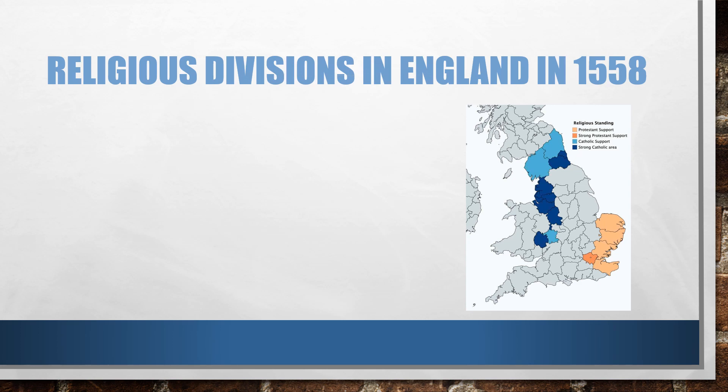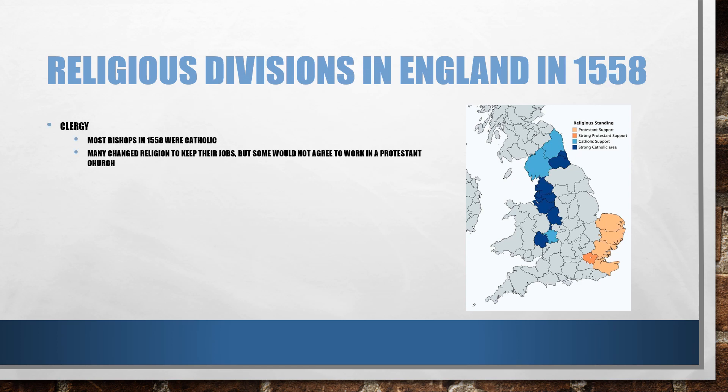In terms of the religious divides in England in 1558, there was quite significant opposition from the clergy in that most bishops in 1558 were Catholic. Many ended up changing their religion to keep their jobs, but some would not agree to work in a Protestant church.